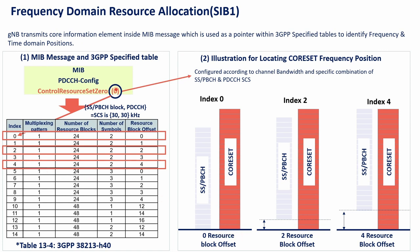For example, if the index is 2, it again gives 24 resource blocks over 2 symbols but with an RB offset of 2, meaning the coreset starts 2 resource blocks before the SSB. Another example with offset 4 means the coreset starts 4 resource blocks before the SSB. This informs the user where to locate and decode SIB1.